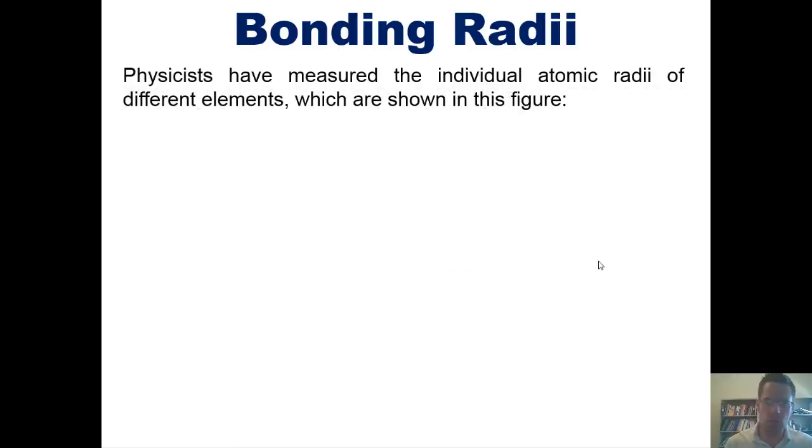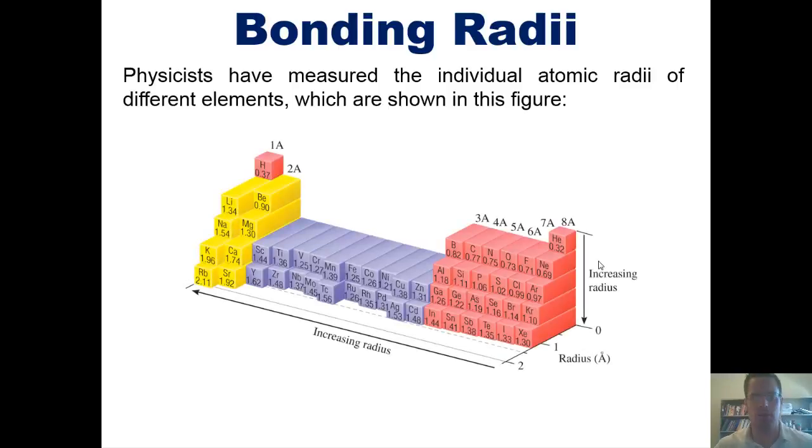Physicists have measured the individual atomic radii of different elements, which are shown in this figure, which I happen to have shown you before. Once again, the numbers shown here represent the radii from each nucleus of each of these individual elements to the outermost extent of their largest orbital.